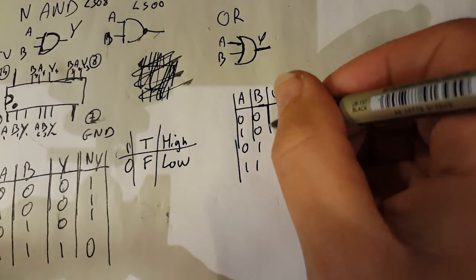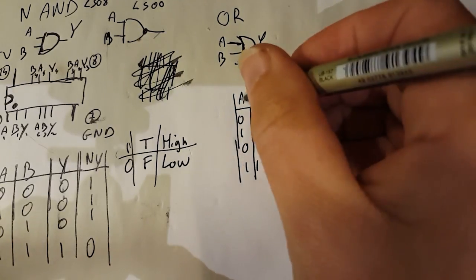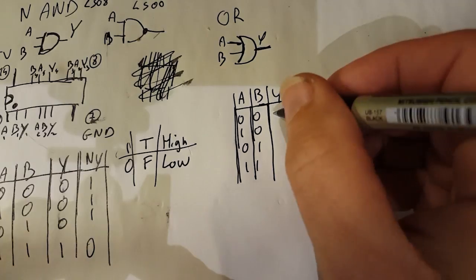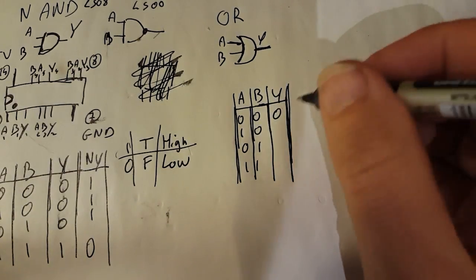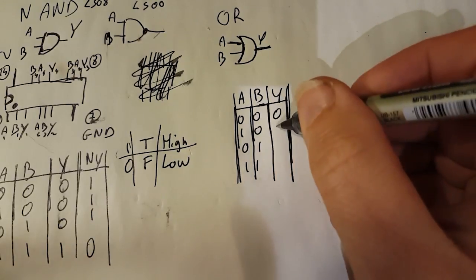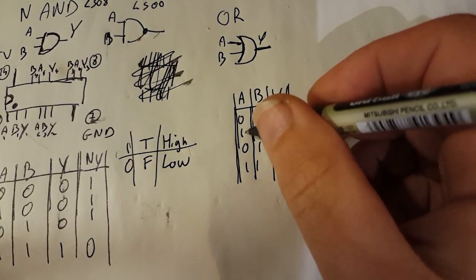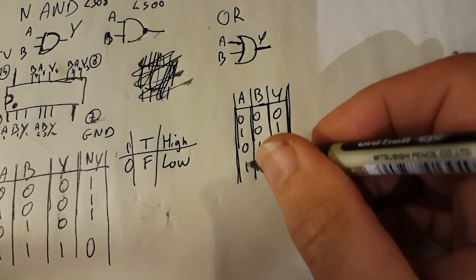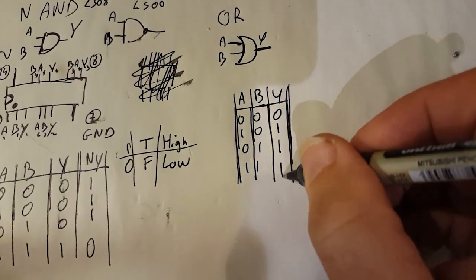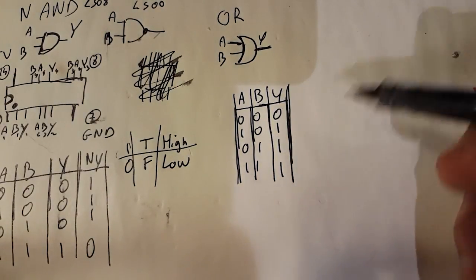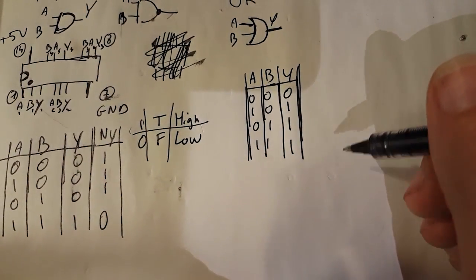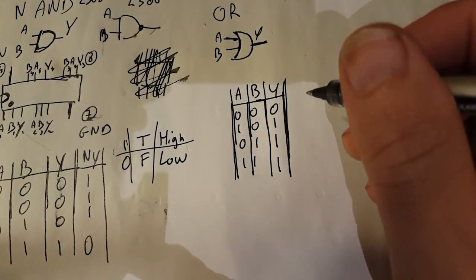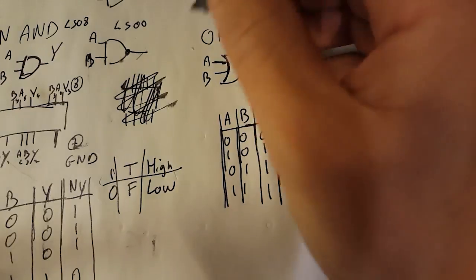The truth table for the OR gate: if A is zero and B is zero, the output is zero. If A is one and B is zero, the output is one. A zero and B one also gives one, and if both are high, the output is one — because we're waiting for at least one of them to be high. Similarly, we have NOR gates which are the opposite.